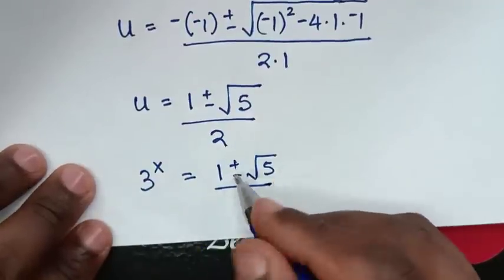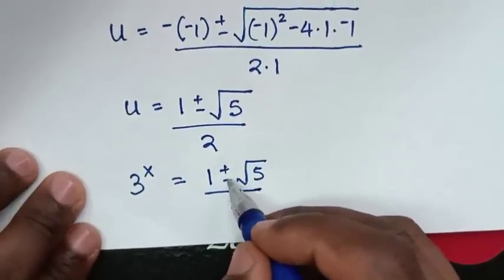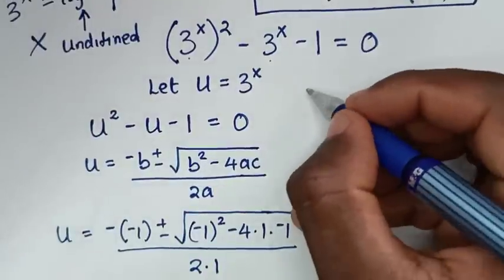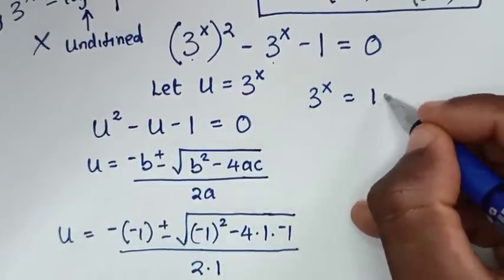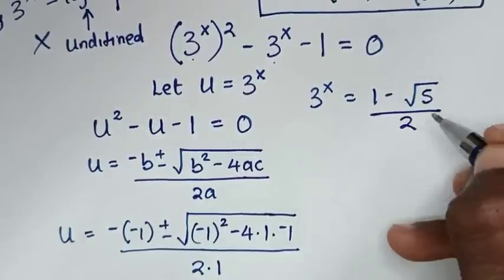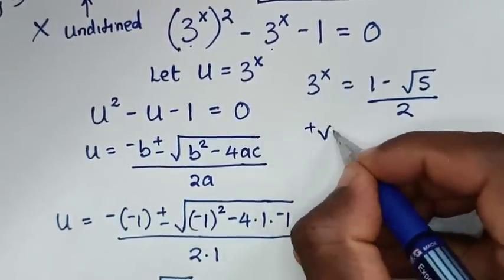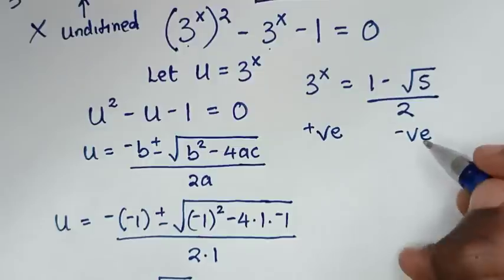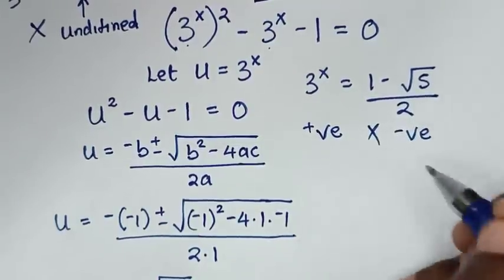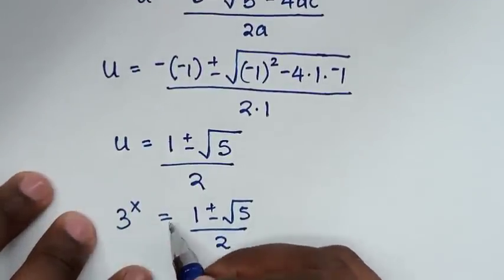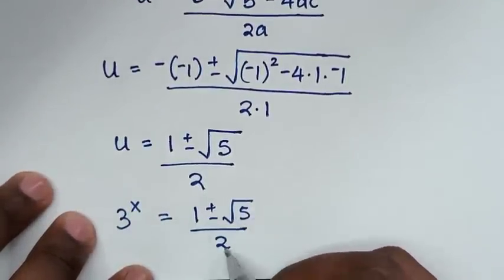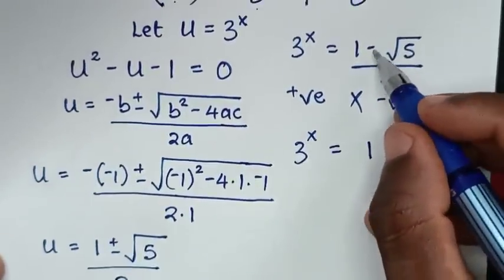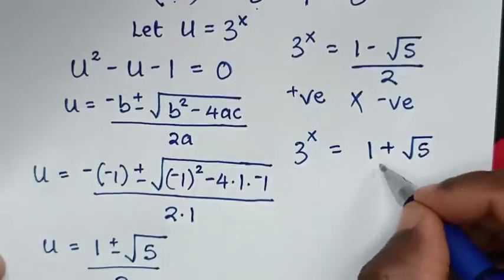We have two solutions because of plus or minus. Recalling that u equals 3 power of x, for the minus case, 3 power of x equals (1 minus square root of 5) over 2, which is a negative value. Since 3 power of any number is always positive, this solution is not possible and we reject it. We keep the positive solution: 3 power of x equals (1 plus square root of 5) over 2.